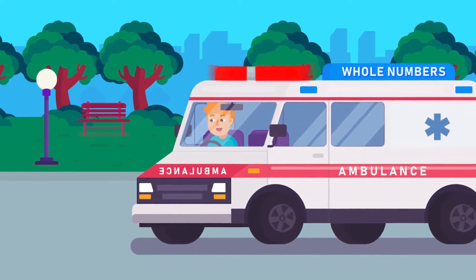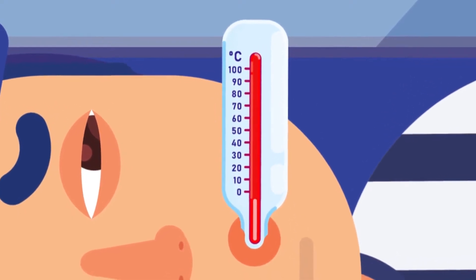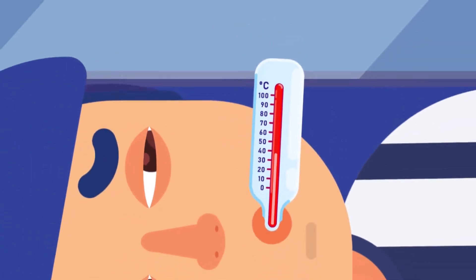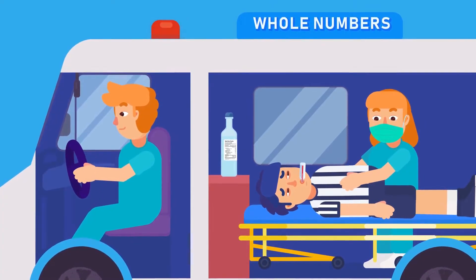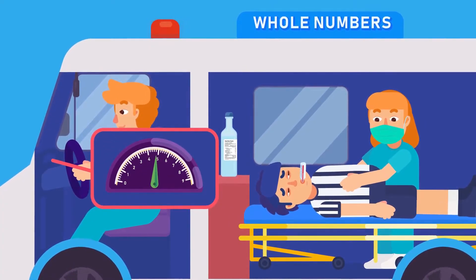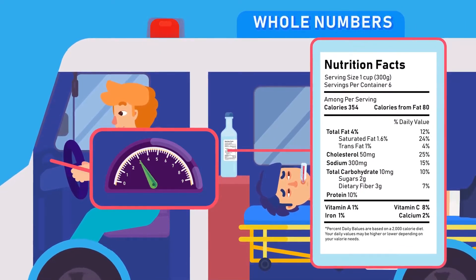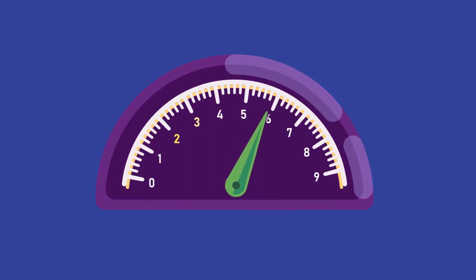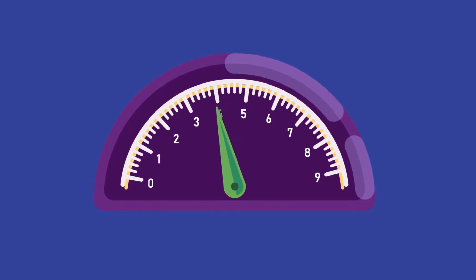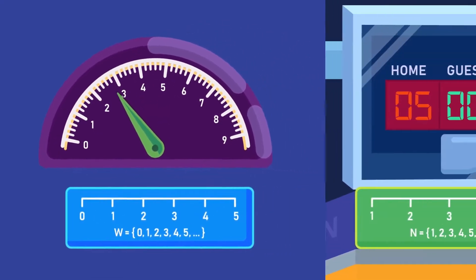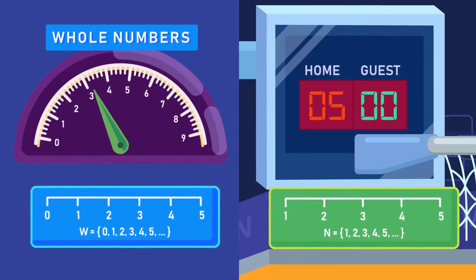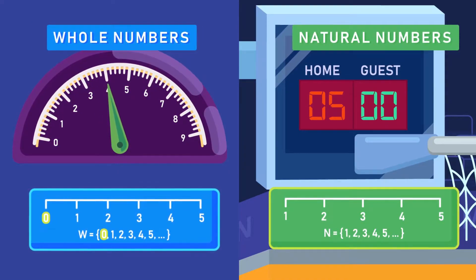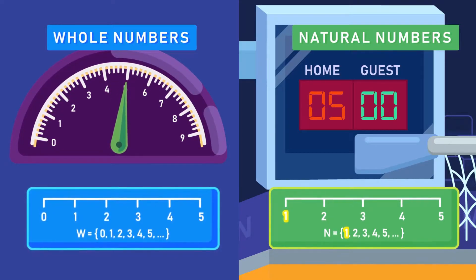Whole numbers. What about thermometers? Why do they start counting from zero? For some purposes, we also count objects including zero, such as measuring the speed in a speedometer, or even to provide information in a nutrition label. In set numbers, these natural numbers including zero are called whole numbers. You have to remember that the difference between whole numbers and natural numbers is that whole numbers have zero included, whereas natural numbers start from one, excluding zero.